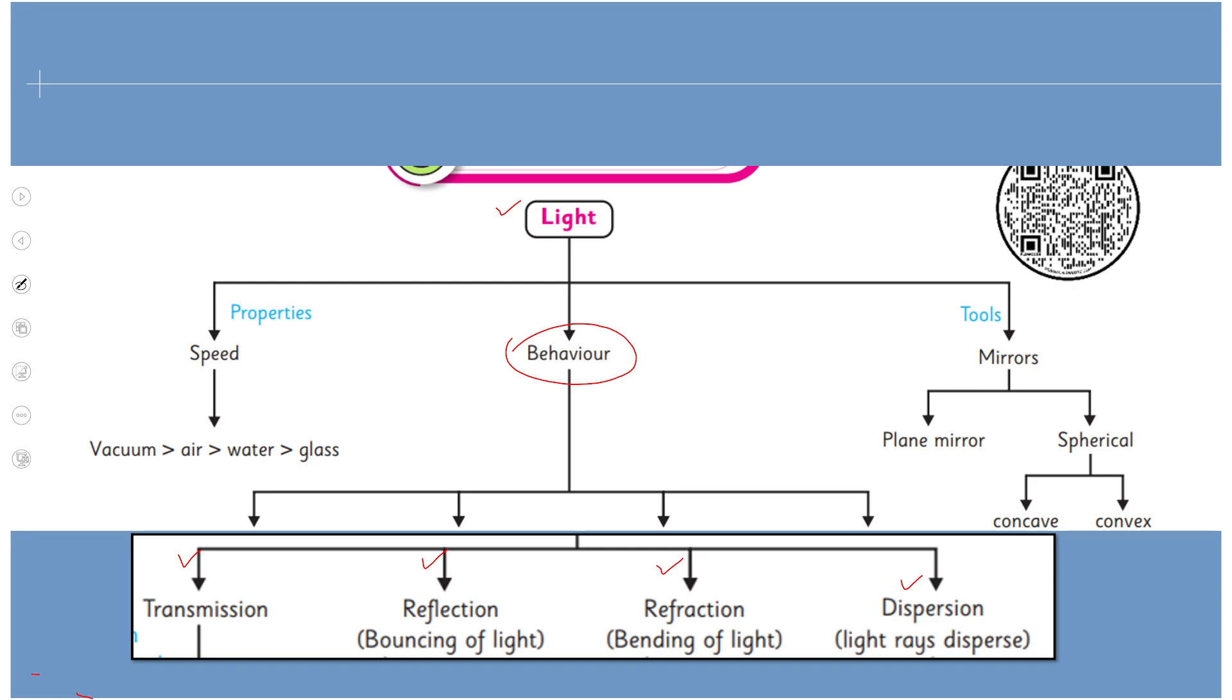Uske ilawa humne discuss kiya humare paas mirrors ko that are basically the tools which are used to describe the behavior of light. We have two types of mirror: the first one is the plane mirror whereas second one is the spherical mirror. Agar hum spherical mirror ki baat karen to humare paas do types hain: concave mirror and convex mirror.